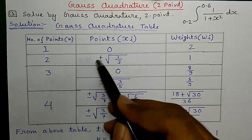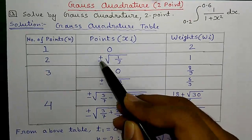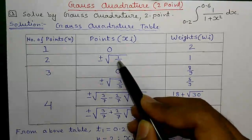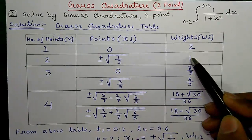So, for two-point method, our points will be plus or minus root over 1 by 3. And weights will be 1.